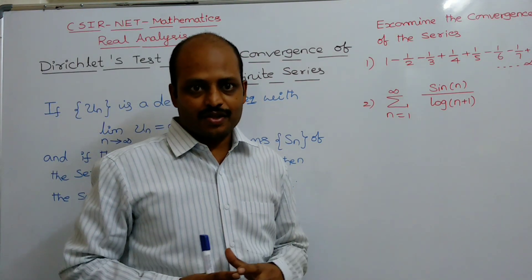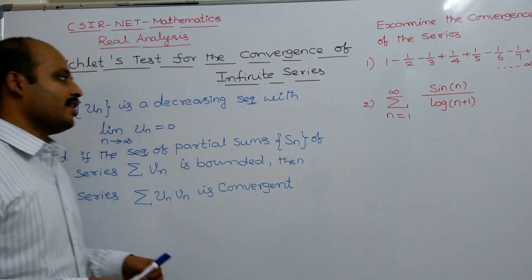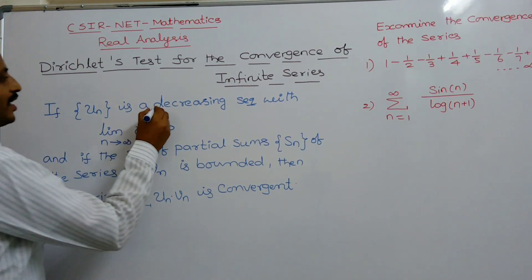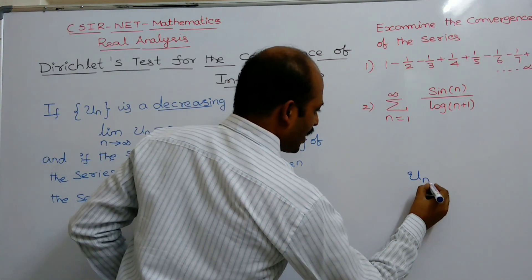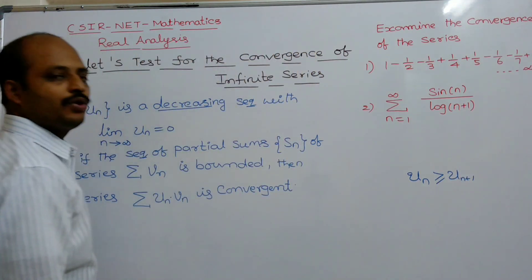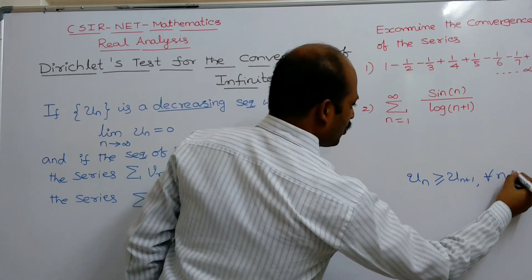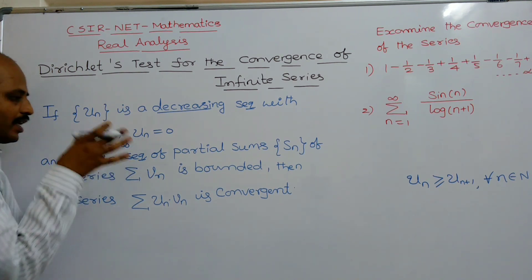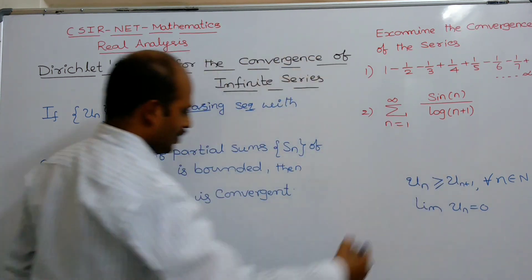Dirichlet test for the convergence of infinite series. The statement is: if UN is a decreasing sequence — meaning UN is greater than or equal to UN plus 1 for all N belonging to the natural numbers — and limit UN equals 0.